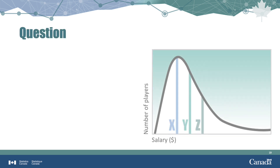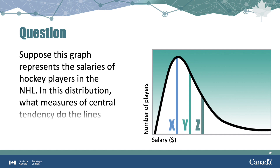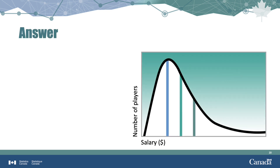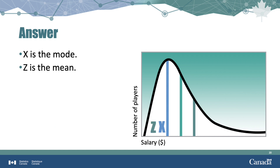For this knowledge check, let's practice our understanding of central tendency. In the graph, the salaries of hockey players are displayed on the horizontal axis, and the number of players is displayed on the vertical axis. What measures of central tendency are represented by the lines x, y, and z? The salary that the greatest number of players earn is x, so x is the mode. The curve has a tail to the right, meaning a few hockey players earn a very high salary. These values pull the average upwards, so z is the mean. y is approximately where half of the players are below that value and half are above, therefore y is the median.